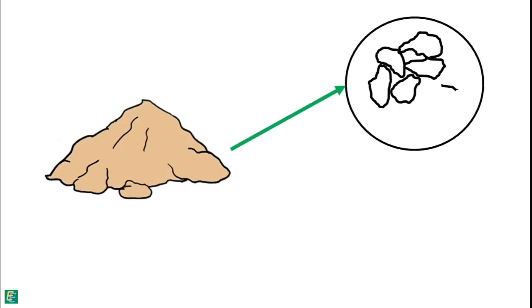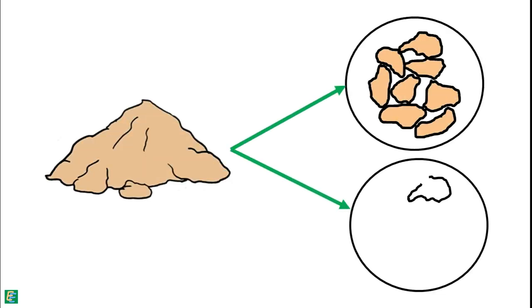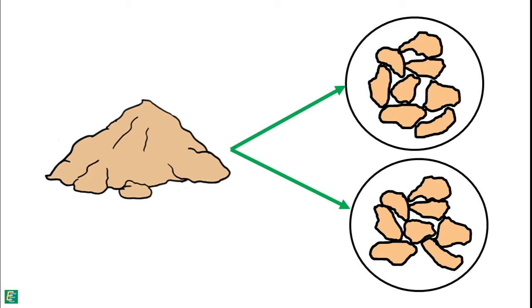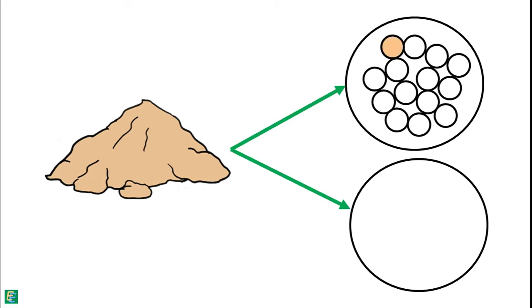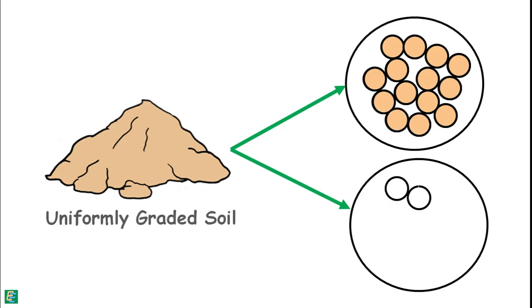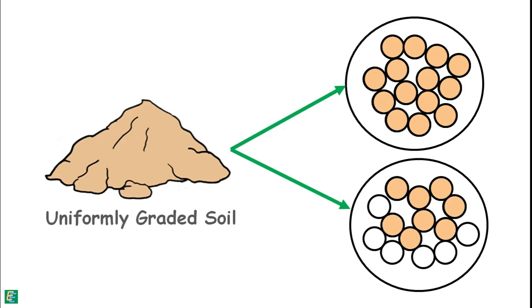We should keep in mind that a soil mass can have different pore size distributions in different deposits of the same soil. Even a uniformly graded soil — one with all particles of similar size — can have different pore size distributions in its different deposits. Because of that, different soil deposits may yield different capillary rise.